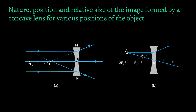We're going to look at image formation by a concave lens. We first did the convex lens, now we're doing the concave lens. There are only two cases. When the object is at infinity, rays come parallel to the principal axis. Since a concave lens is a diverging lens, the rays don't actually meet in real life, so we retrace them. The rays appear to diverge from the focus.